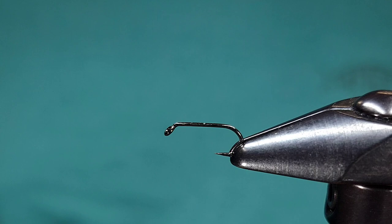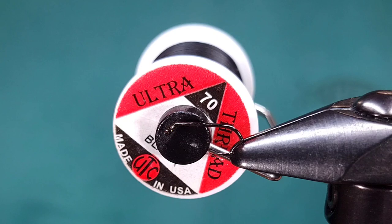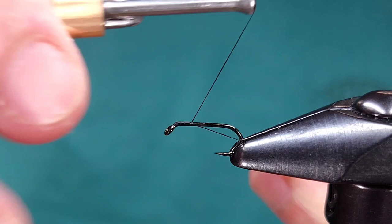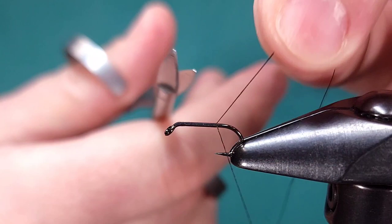For the thread I'm using 70 denier UTC in black. I'm just going to get started with my thread right behind the hook eye and take this all the way back to the bend for snipping or breaking my thread off.